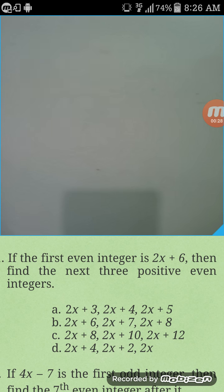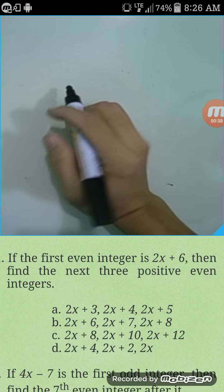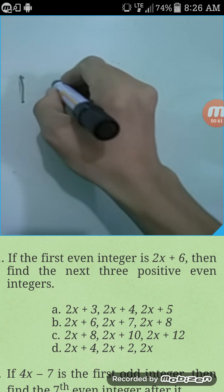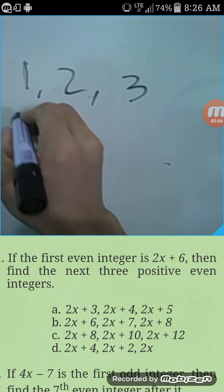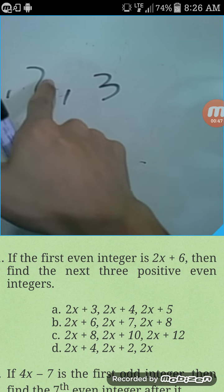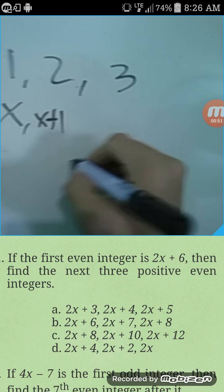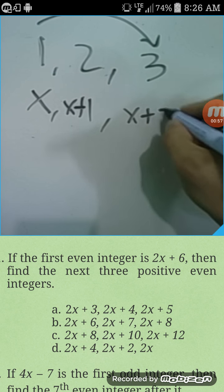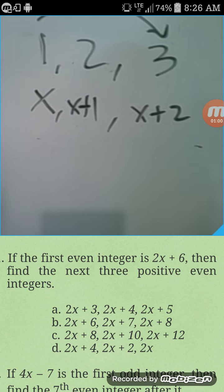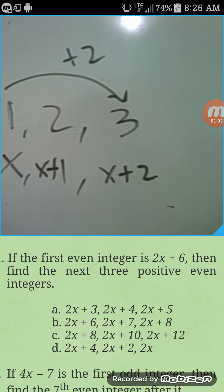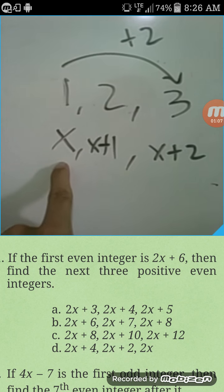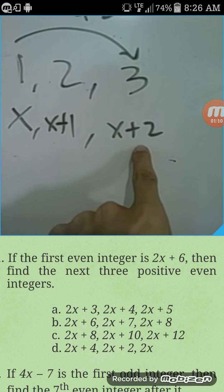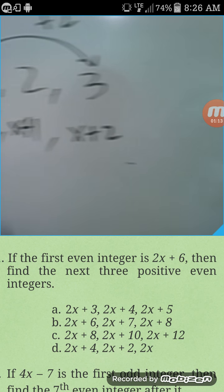The first question is: if the first even integer is 2x plus 6, then find the next three positive even integers. Now, if you have consecutive integers, we say 1, 2, 3 — or in terms of x: the first is x, the second is x plus 1, the third is x plus 2, and so on: x plus 3, x plus 4, x plus 5.